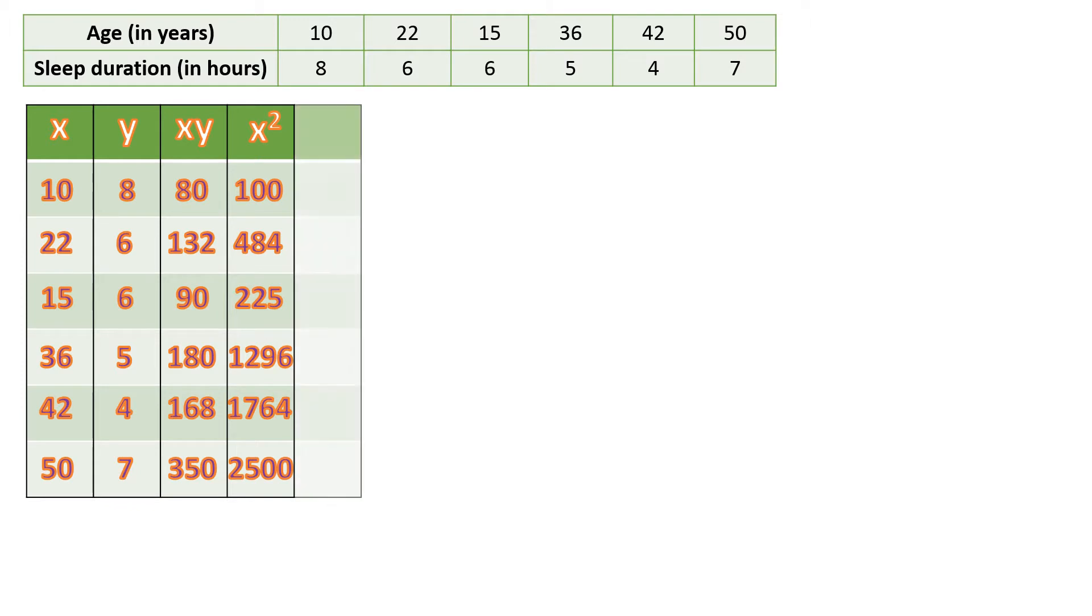Then we're going to do the same to the Y, square the Y. 8 squared is 64, 6 squared is 36, same as the next one, 5 squared is 25, 4 squared is 16, and 7 squared is 49.